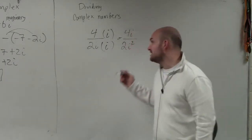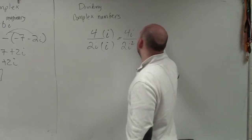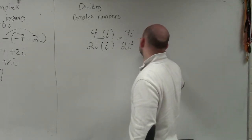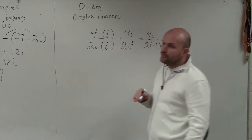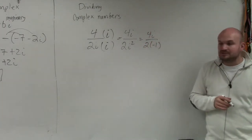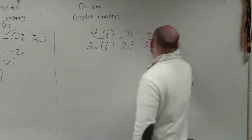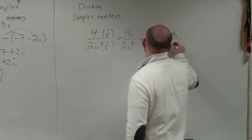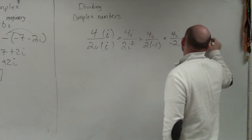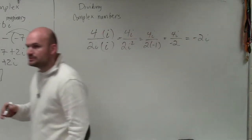So i squared just represents negative 1. Was it going to be on the test? Yeah. So 4i divided by 2 times negative 1. Your final answer is just negative 2.